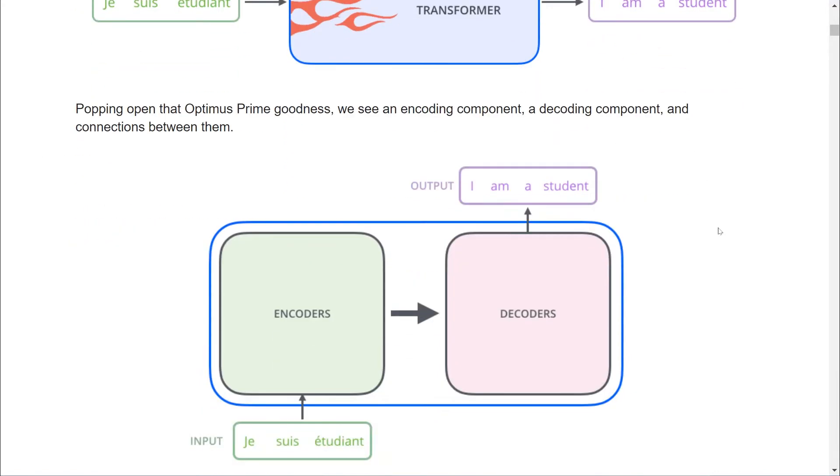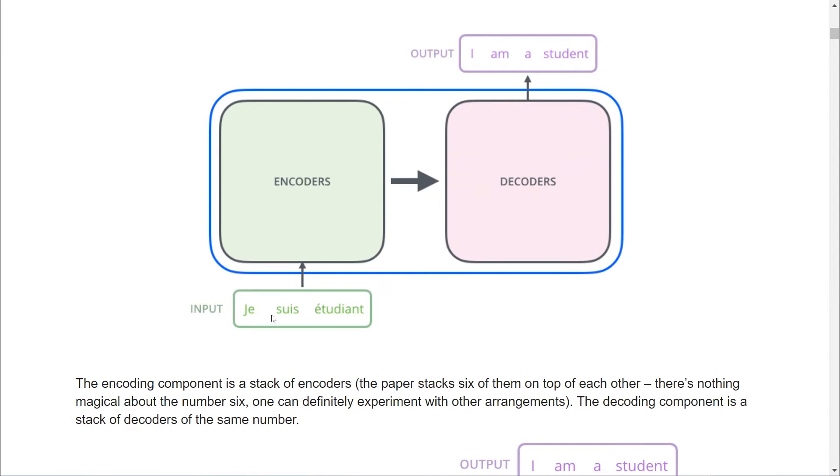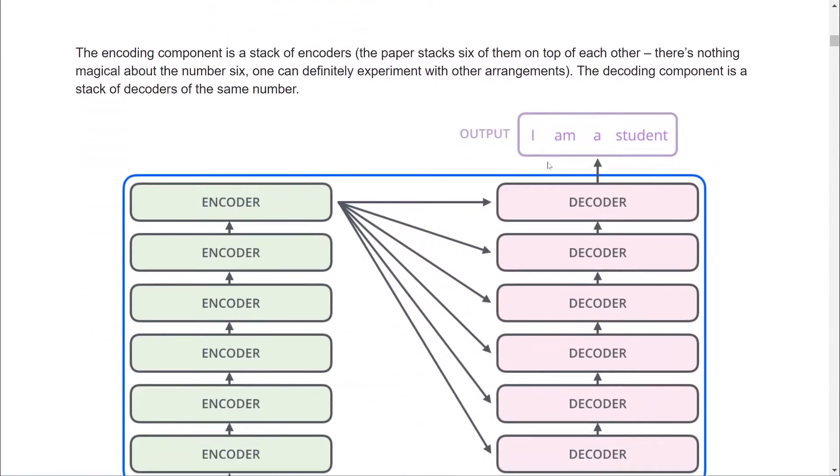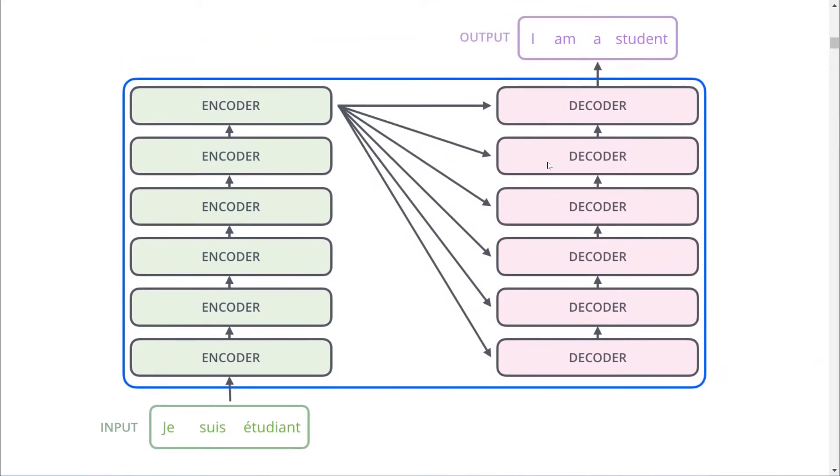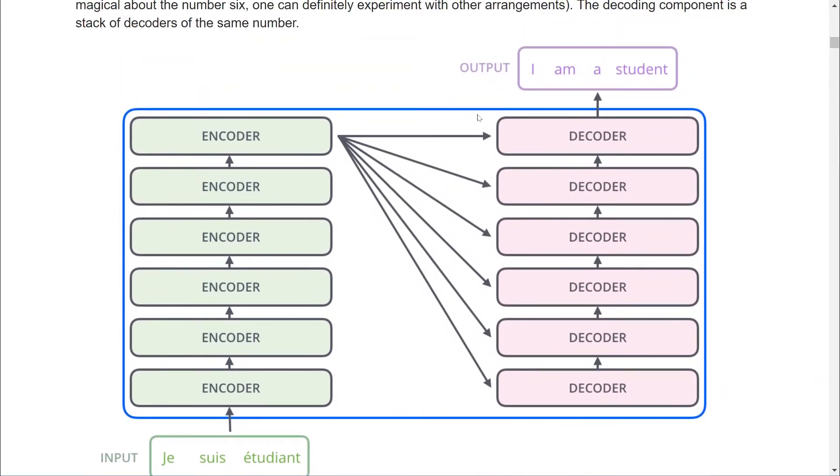So in this example, the goal is to translate a French sentence into English. At the highest level, we've got a black box where French goes in, English comes out. Popping open the hood, we find there's an encoding component and a decoding component. The encoding component is a stack of encoders. The paper uses six, but that's a hyperparameter that can be tuned. And the decoders consist of a stack of the same number. Each encoder layer is identical in structure, but they each have their own weights.